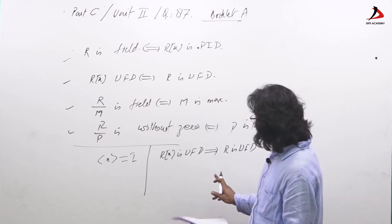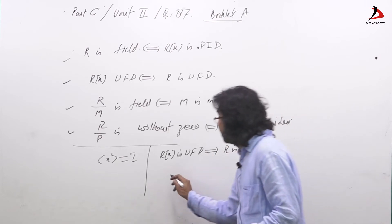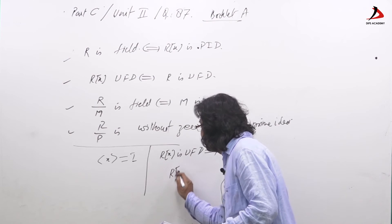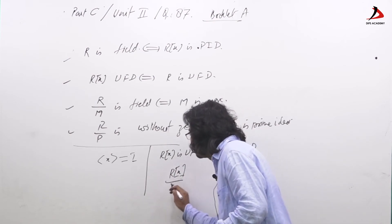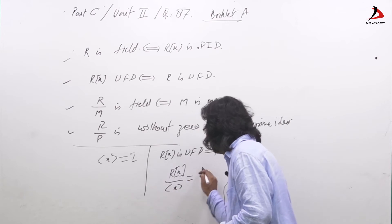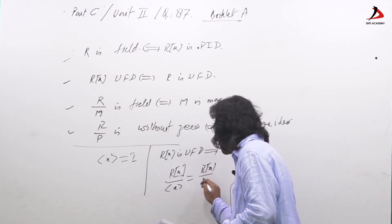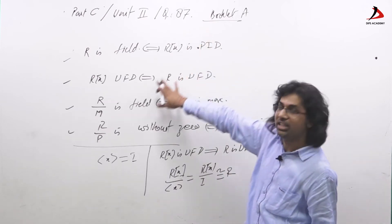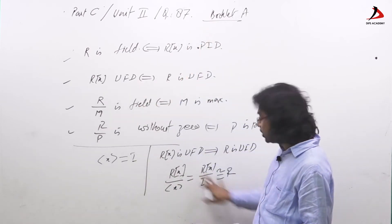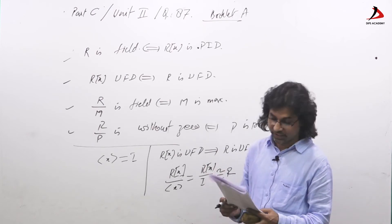Now by fundamental theorem of homomorphism, we have Rx over X which is equal to Rx over I is isomorphic to R. Now recall these results and these observations, we go one by one for each option.